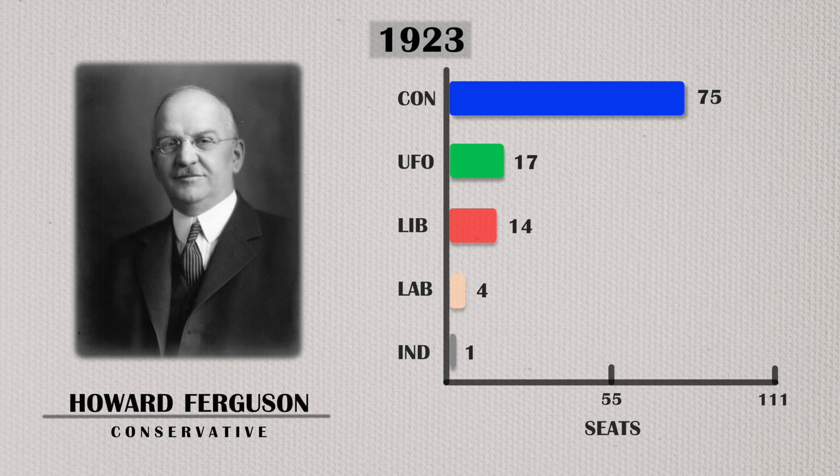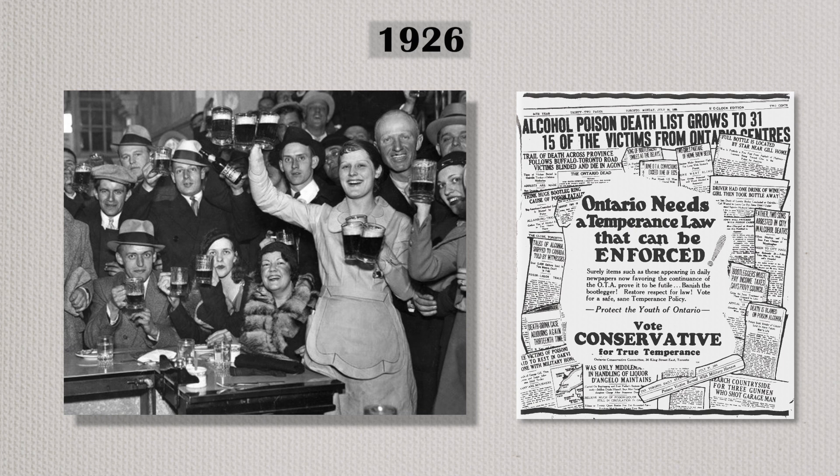Howard Ferguson was a bit more of a partisan street fighter — a clever politician. In 1926, he recognized that alcohol could be a winning issue. Prohibition had been placed in Ontario and wasn't very popular in a lot of places, so he suggested that rather than having alcohol be something illegal that was smuggled and bootlegged, why not bring alcohol sales under government control? The population liked that, and he won the 1926 election. As a result, Ontario now has the LCBO. Ferguson would win one more election for the Conservatives in 1929, and then in 1930, he took a job as the UK High Commissioner in London.